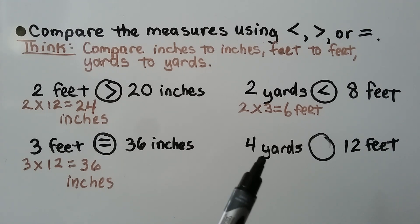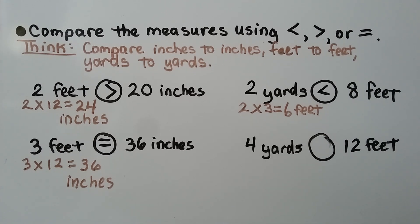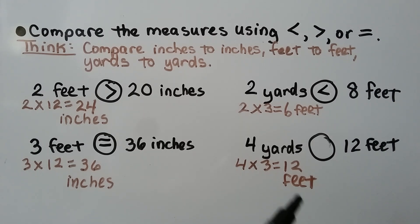Here we have four yards compared to 12 feet. We need to change yards into feet or feet into yards. There are three feet in each yard, so we multiply four times three to get 12 feet. Now we can compare 12 feet to 12 feet — they're equal. So four yards is equal to 12 feet.